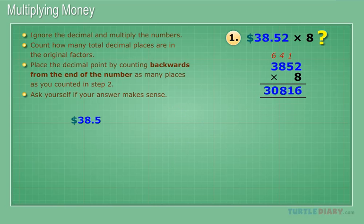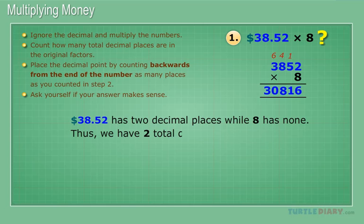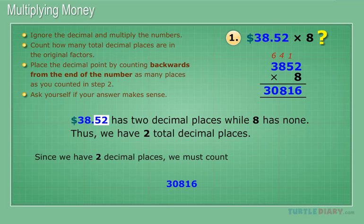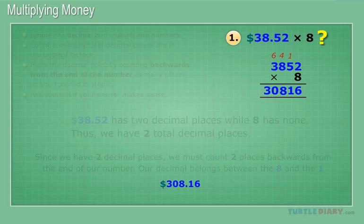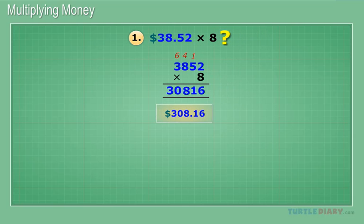$38.52 has two decimal places while 8 has none, thus we have two total decimal places. Since we have two decimal places, we must count two places backwards from the end of our number. Our decimal belongs between the 8 and the 1. $308.16.